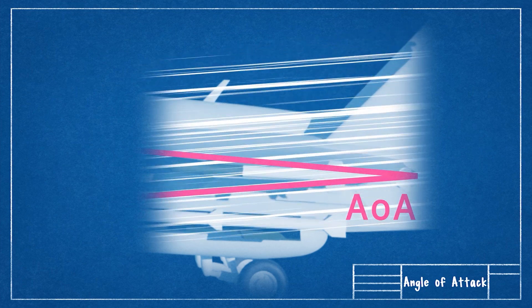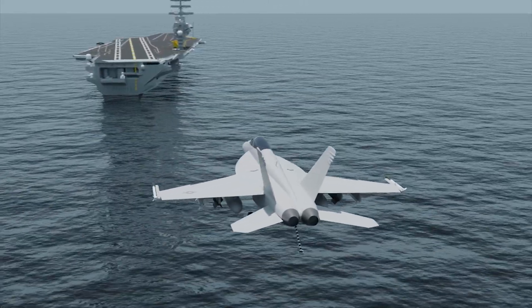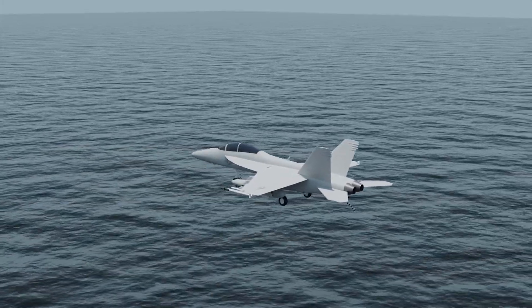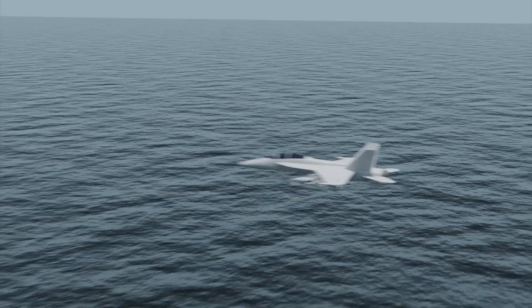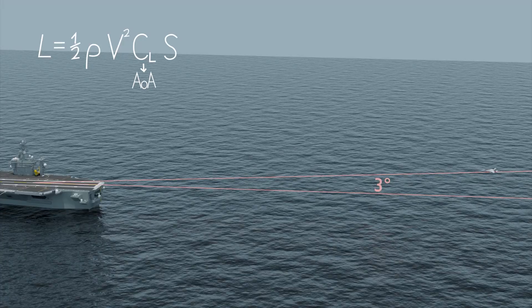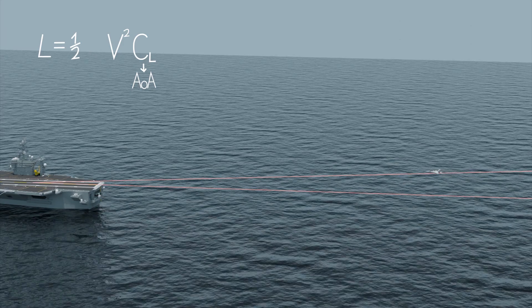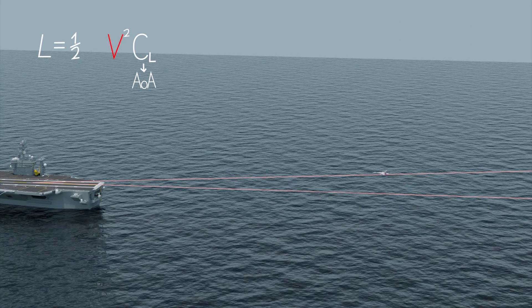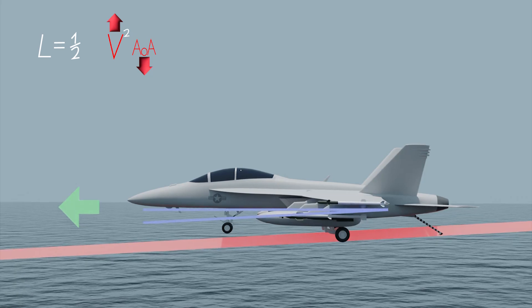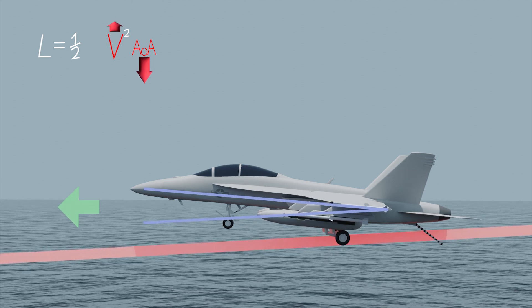Pitch attitude is the relationship between the aircraft nose and the horizon. Now let's analyze the forces at play during a steady descent, such as the final approach phase. The aircraft must maintain a constant 3-degree glide path, which means lift remains constant. Since the wing area, aircraft shape, and air density are constant, we're left with only two variables — airspeed and AOA. According to the lift formula, these two are inversely proportional: higher airspeed requires a lower AOA, while lower airspeed demands a higher AOA.